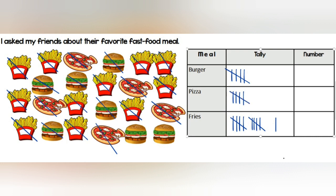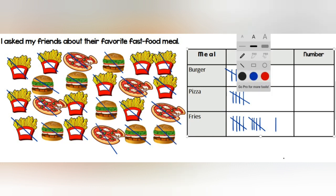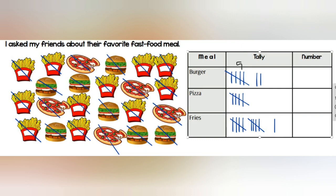Now when I'm counting the group of five tally marks, I'm going to skip count by five. Let's see how. Look at the burgers — five and two more, and that makes seven. The pizzas are exactly five. The fries are five, ten, and one more, so that makes eleven.